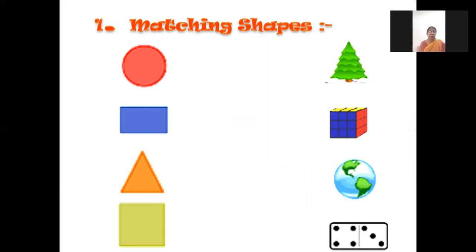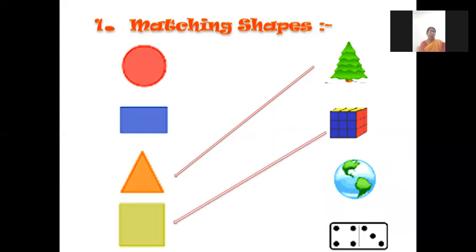Now we will match shapes. First we will match the Christmas tree with the triangle. Mamma has drawn a line from Christmas tree to triangle. Next is cube — we will match it with square. Next shape is of earth, so we will match it with circle. Next is a device, so we will match it with rectangle. So we have to practice matching shapes like this.